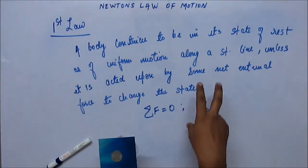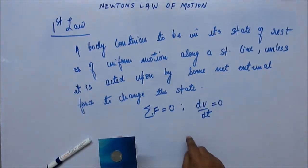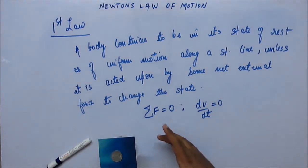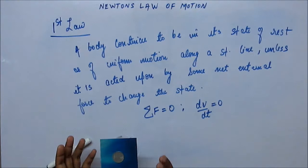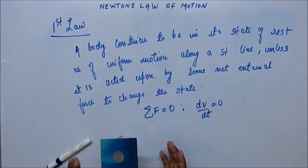So Newton, when he gave the first law, he also gave the definition of inertia. And the concept of inertia comes along with the Newton's first law. The paper he published, both Newton's first law and the concept of inertia, they come together. And Newton was the one who gave the concept of both. So here we can understand and correlate the inertia and Newton's first law.